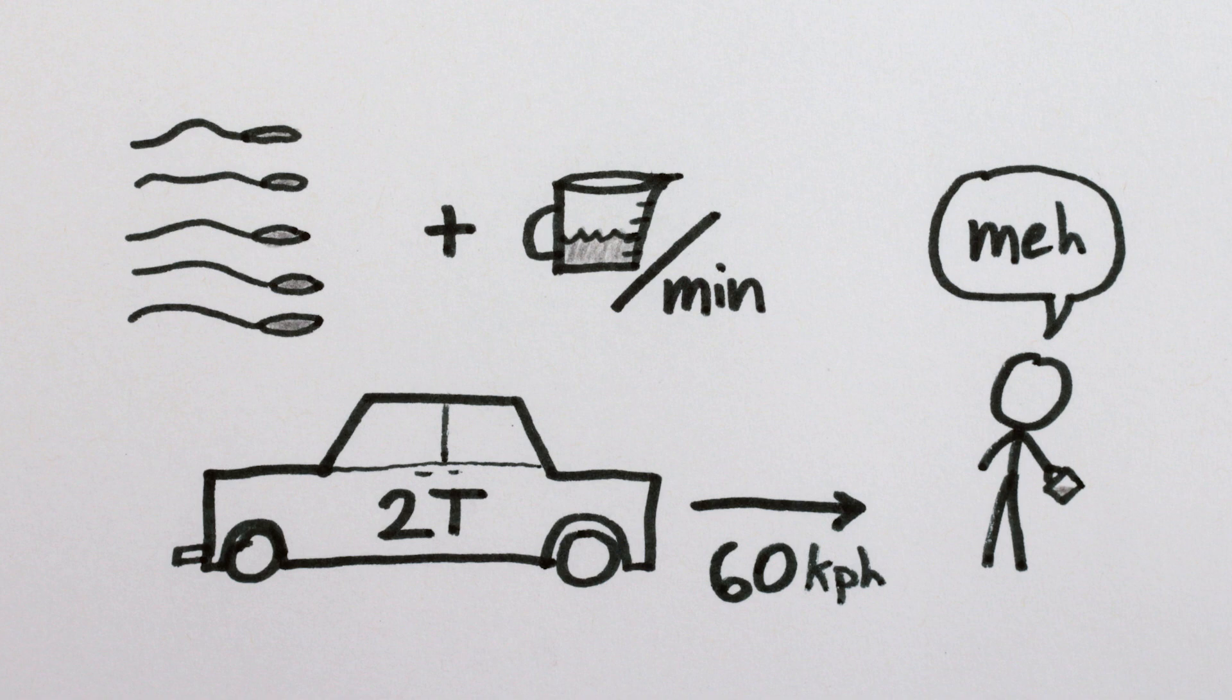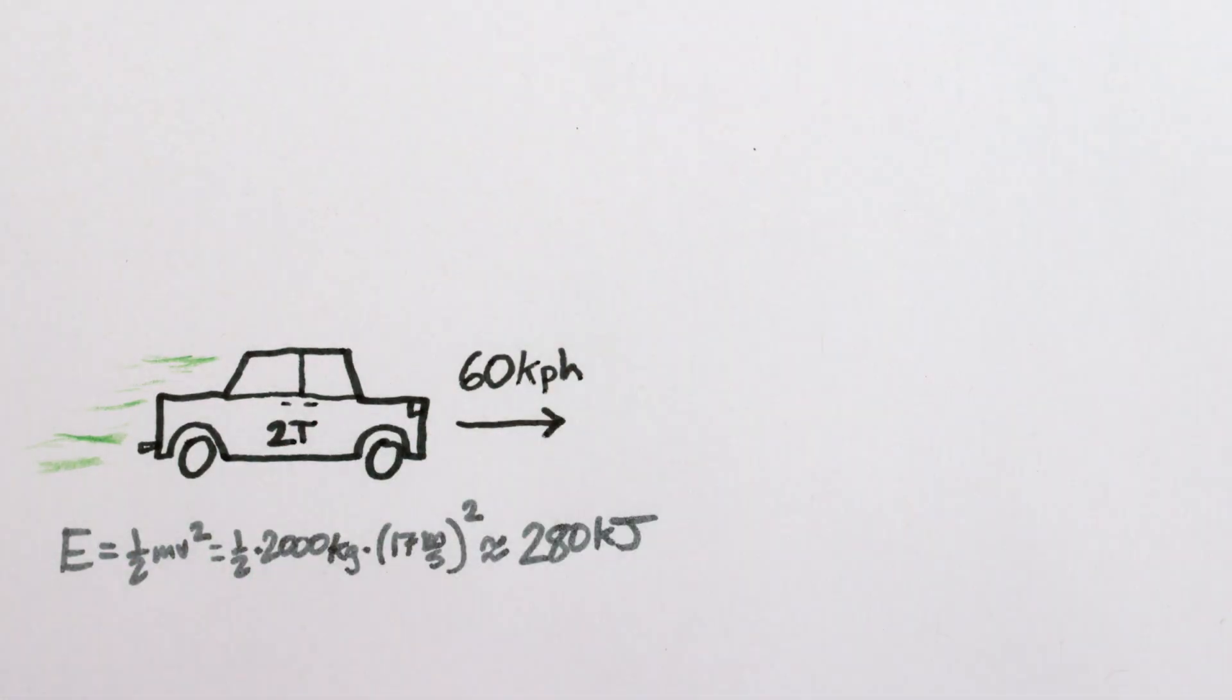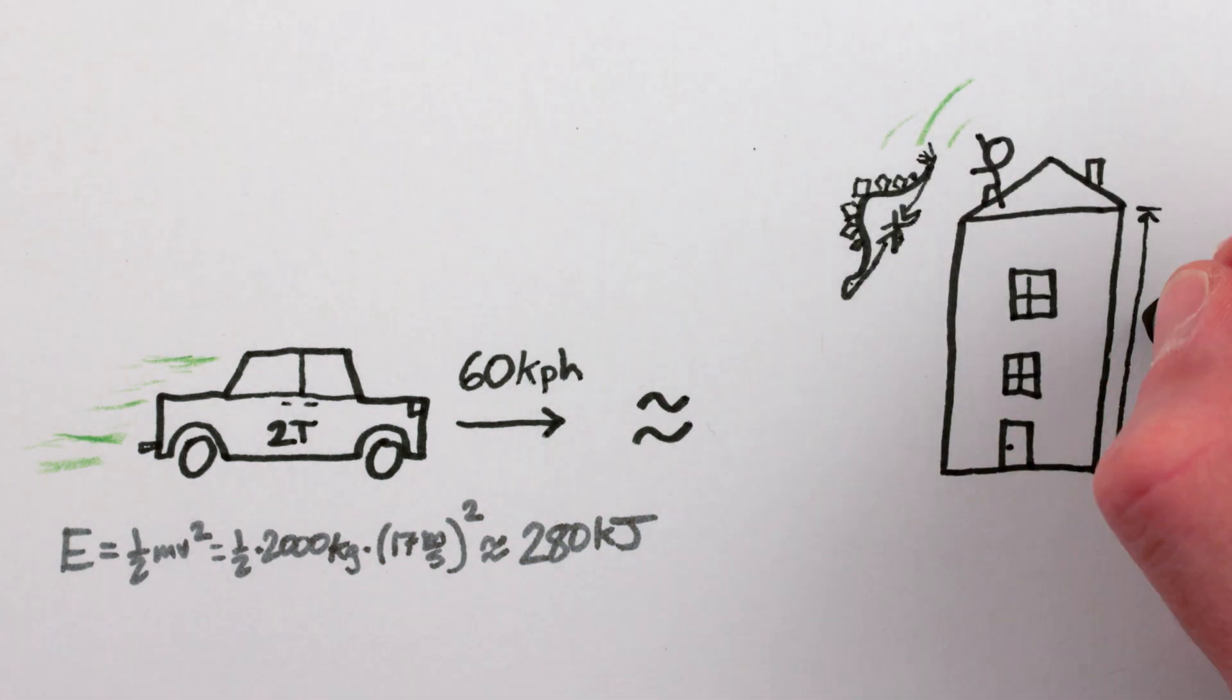That might not sound like a lot of fuel, but the energy of a car moving 60 kmph is equivalent to dropping an elephant, or stegosaurus, from the top of a three-story building.